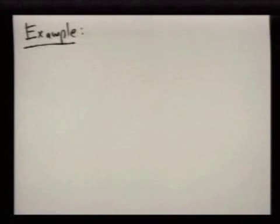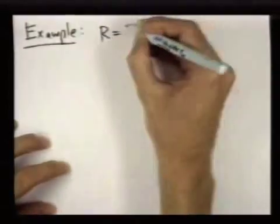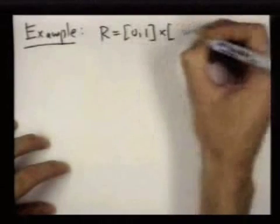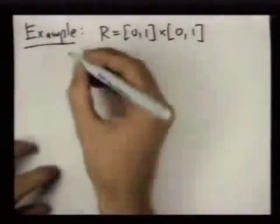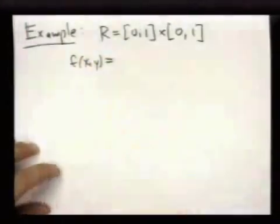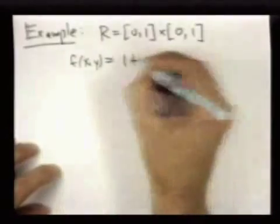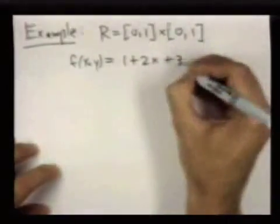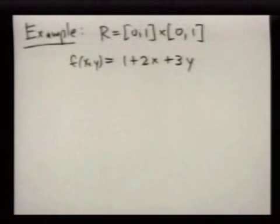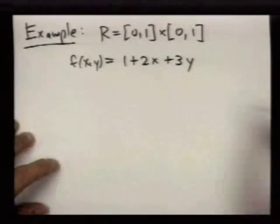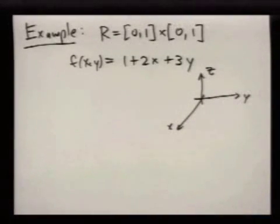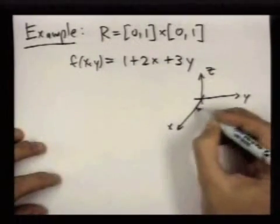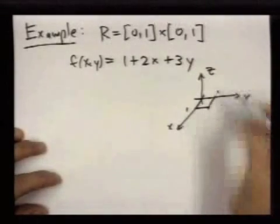So this first example will be pretty simple, and it'll be something that we already know how to find the surface area of. So let me take for the region just to be this square in the xy plane, and I'll take the function to be something pretty simple, 1 plus 2x plus 3y. What this looks like, well, the graph of f is a plane. We're just considering it over this rectangle here.